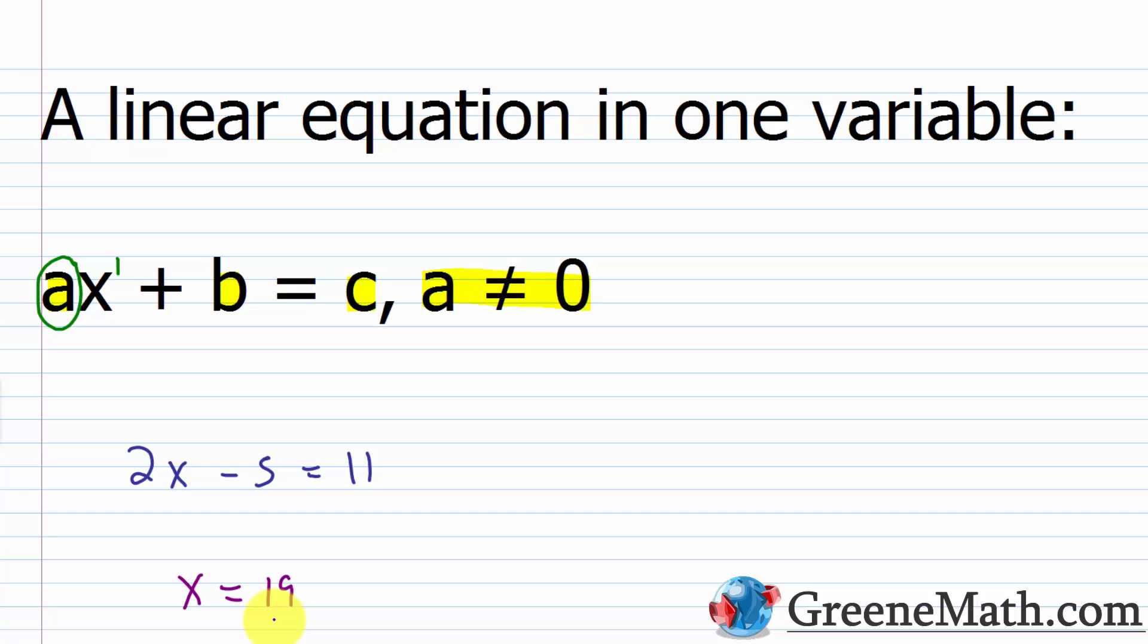Or you could have some fractions involved. You could have something like 1/4 x plus 1/9 equals 23/17. Here, a would be 1/4, b would be 1/9, and c would be 23/17.